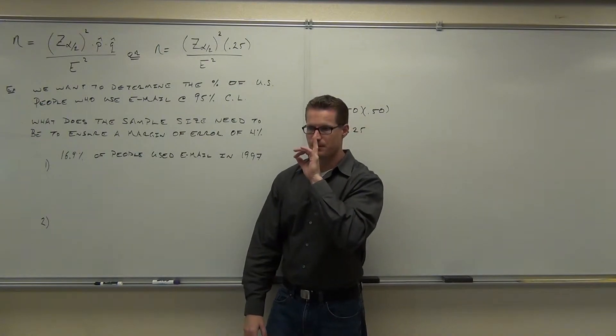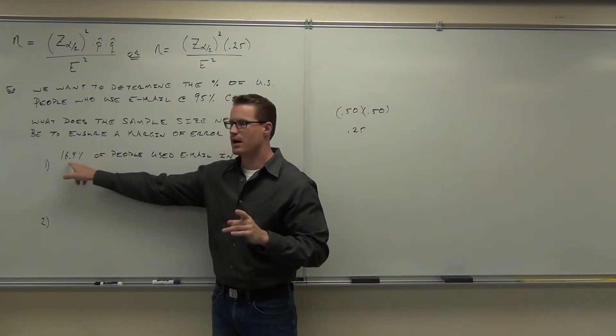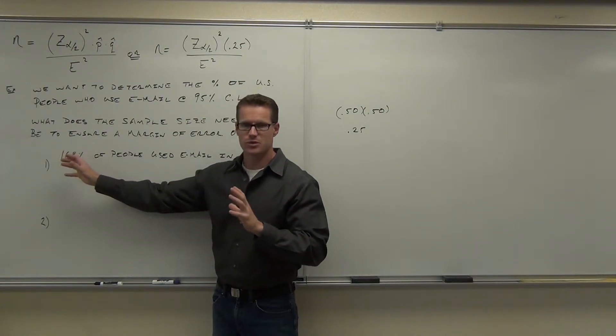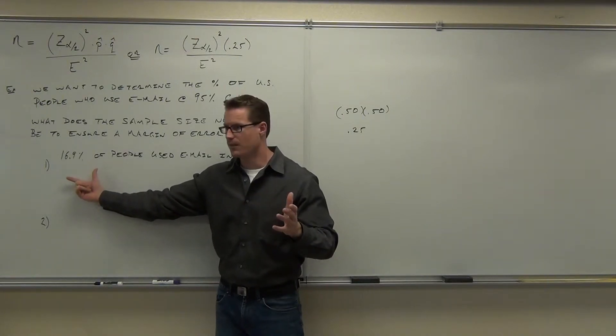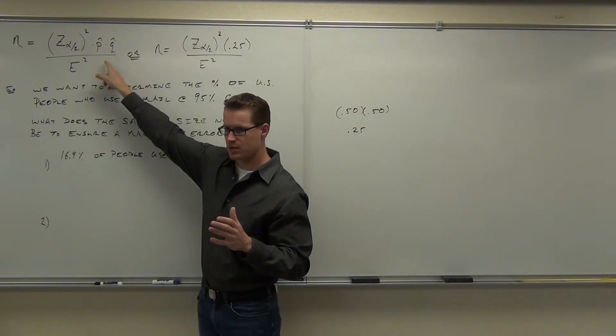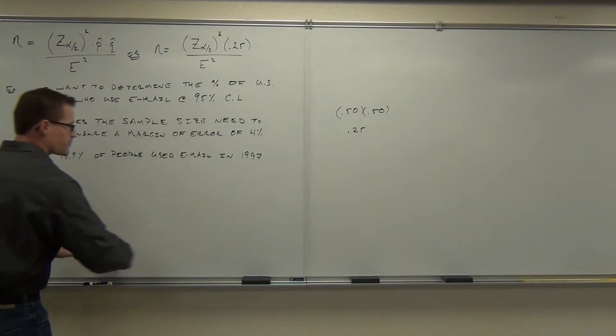Here's option number one. Option number one is, if you have some information about a previous sample that deals with your population parameter in some way, like in this case, 16.9% of the people used email. We can use that in this type of a formula. We can use that here. Let's see how that would work.